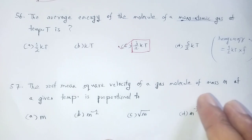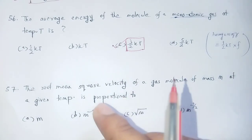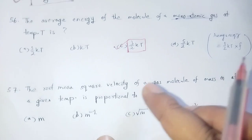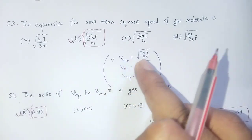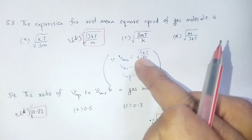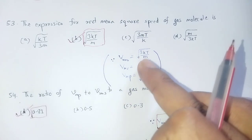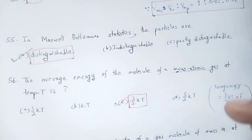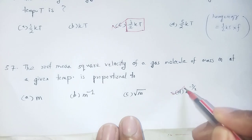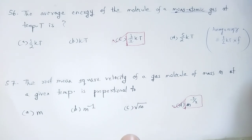Question 57: The root mean square velocity of a gas molecule of mass m at a given temperature is proportional to what? v_rms = √(3kT/m), so at a given temperature it is proportional to 1/√m, i.e., m to the power minus half. Option number D: m^(-1/2).